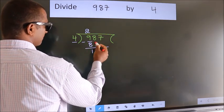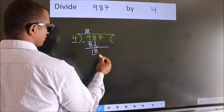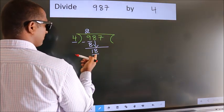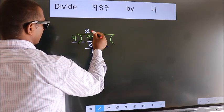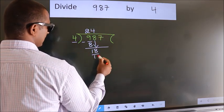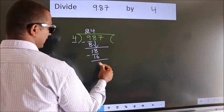After this, bring down the next number. So, 8 down, giving us 18. A number close to 18 in the 4 table is 4 fours, which is 16. Now we subtract. We get 2.